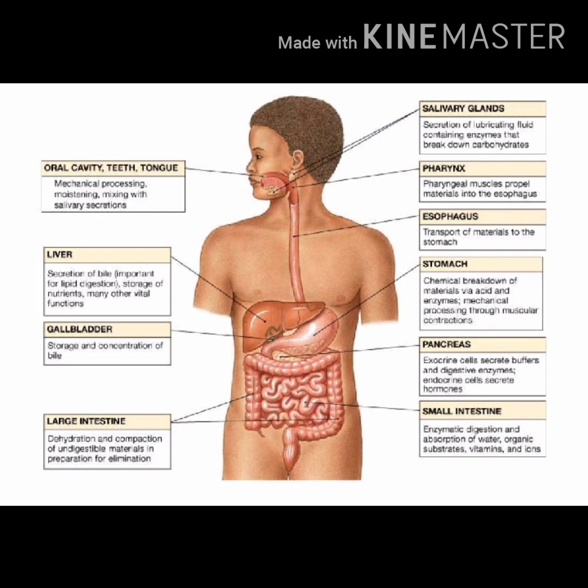Starting from the oral cavity, teeth, and tongue, followed by the large intestine up to the anal canal — that is considered as the GIT system. This includes the oral cavity, teeth, tongue, salivary glands, pharynx, the food pipe called the esophagus which transports materials to the stomach, next the liver, gallbladder, stomach, pancreas, large intestine, and small intestine. These are all the accessory organs involved in the digestion of food.